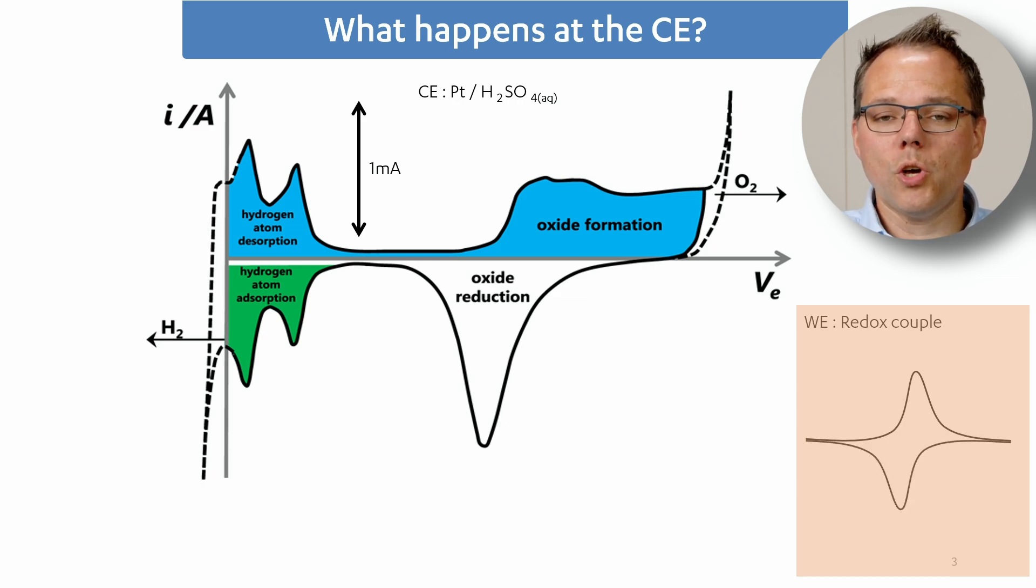Now we want to know what's happening at our counter electrode. Let's go with the extremes. So first with the highest anodic current that we have, which is just for the sake of this example one milliampere, while the working electrode is at 0.3 volts.